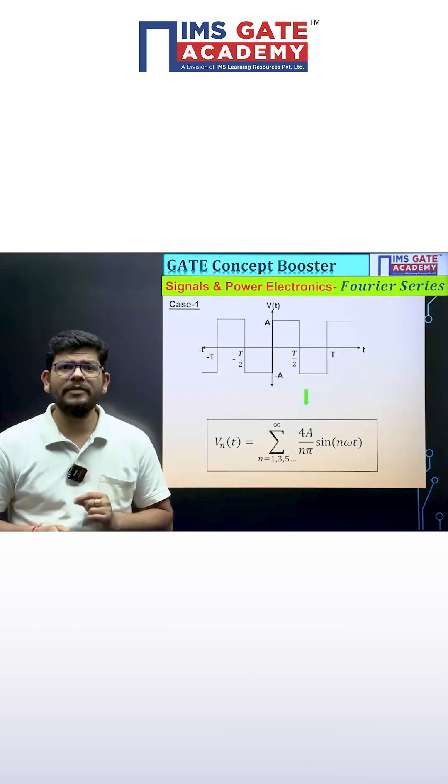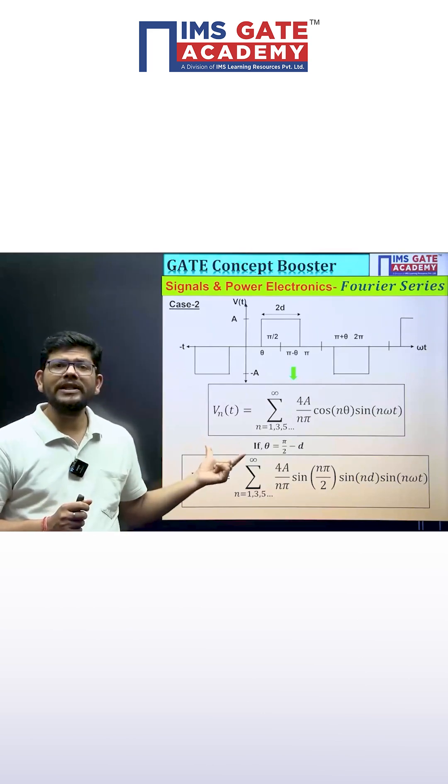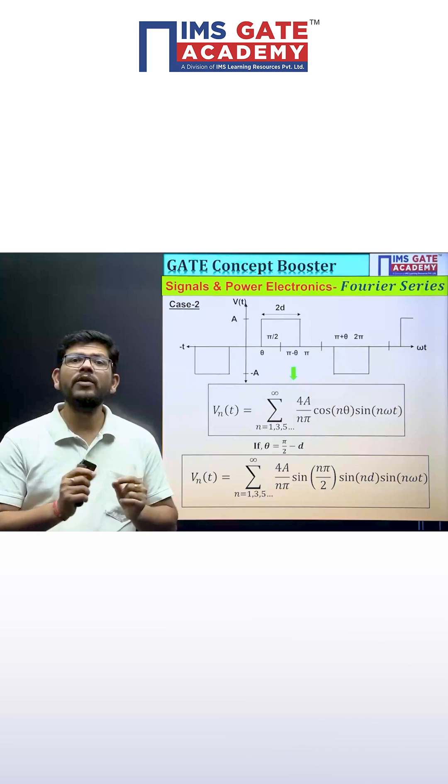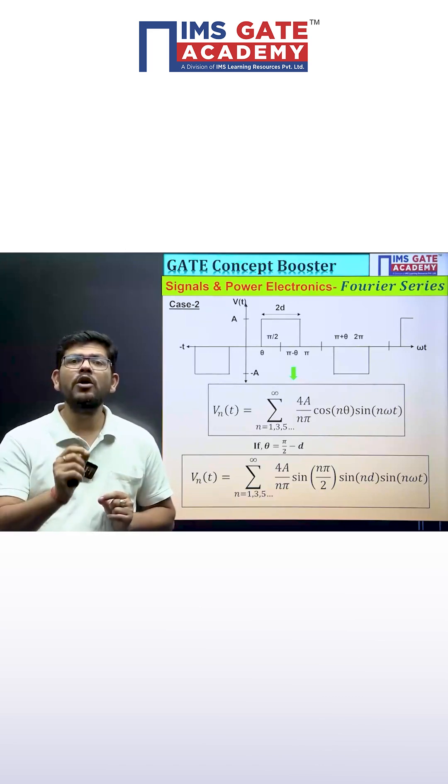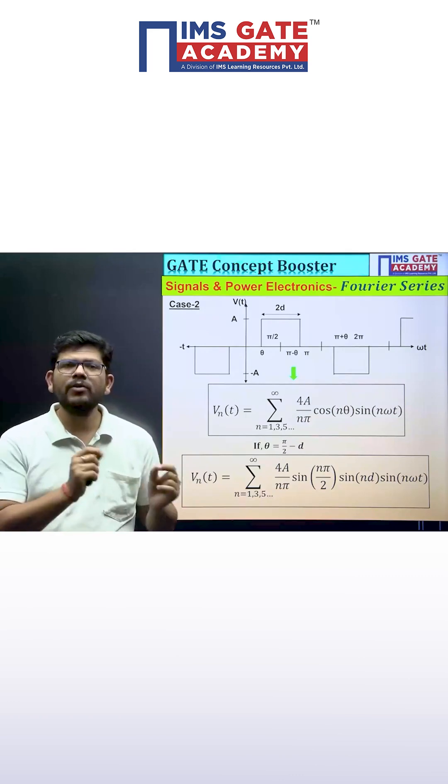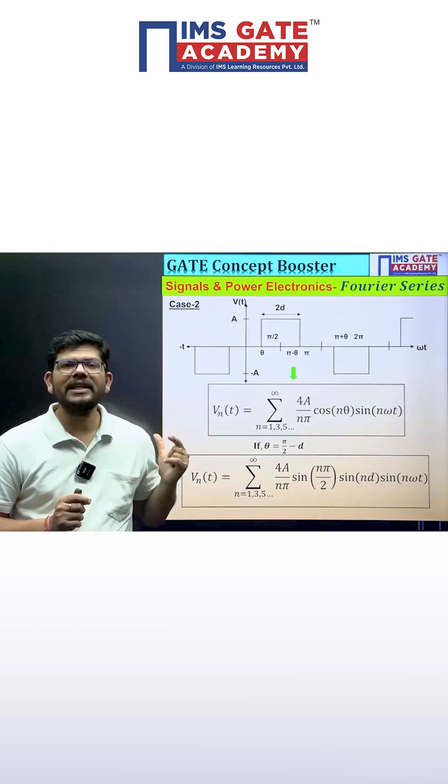Similarly, another expression that you have to practice is for quasi square waveform. If a quasi square waveform is given, the expression will change and become four a upon n pi. You have to introduce cos of n theta in the previous expression of a square wave. So it will be four a upon n pi cos n theta sine n omega naught t, where theta is the given angle.